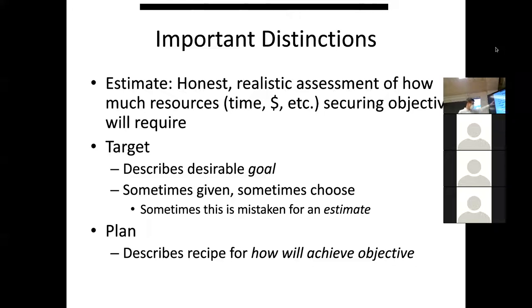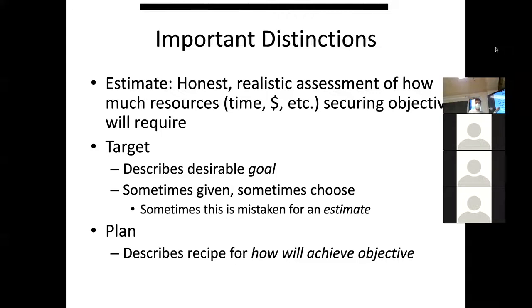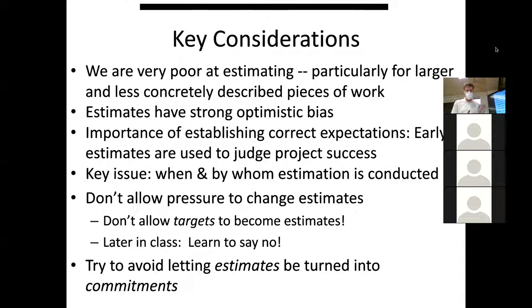A target is something you're shooting for — maybe an aspirational goal. 'We'll try to pull this together by the Christmas season' — it's a desirable goal, not an estimate. It's different from saying it's what you think will definitely happen. And finally there's a distinction from a plan, which is a recipe for how to achieve the goal: how we're going to break down the work.